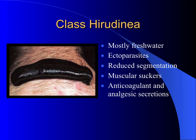The last group are the Hirudinea — the leeches. They are mostly freshwater organisms that are parasites. They have reduced segmentation but a very good muscular system, and they produce anticoagulants and analgesic secretions so that they can numb their host while feeding and ensure that the blood flows.